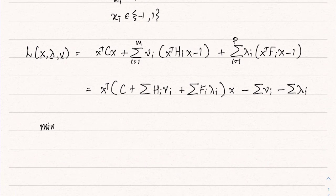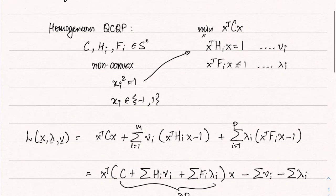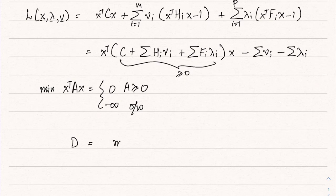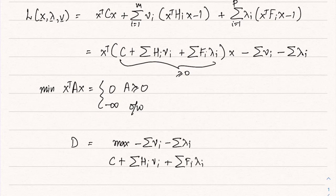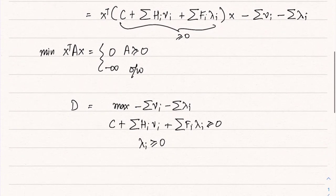Recall that the infimum of x^T A x is 0 when A is PSD, but −∞ otherwise. This implies that the matrix (C + Σ H_i ν_i + Σ F_i λ_i) must be PSD. So the dual problem d equals the maximum of −Σ ν_i − Σ λ_i, subject to C + Σ H_i ν_i + Σ F_i λ_i ⪰ 0 and λ_i ≥ 0. From weak duality, we know p ≥ d.